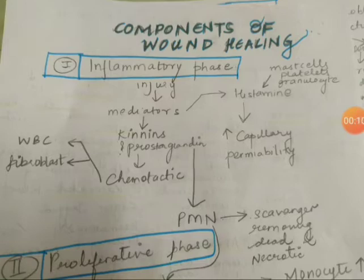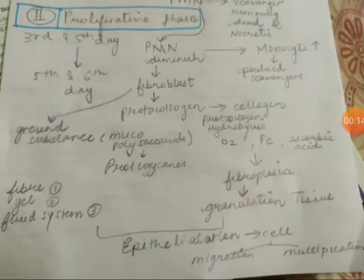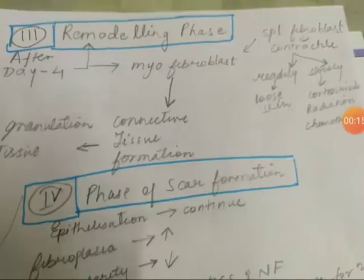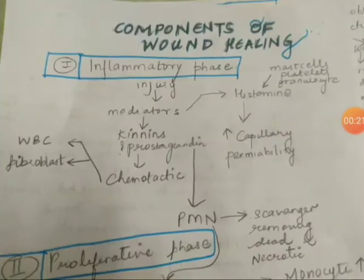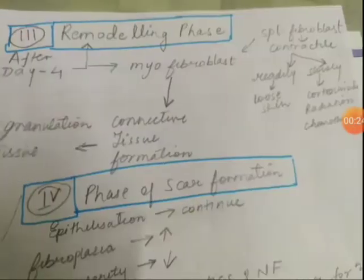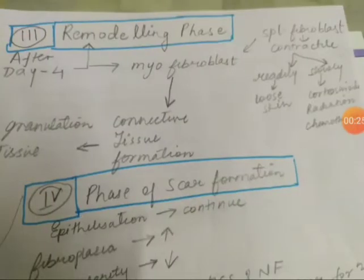There are four phases of wound healing. First, there is the inflammatory phase, then the proliferative phase, then the remodeling phase, and then the fourth and last phase is scar formation. So the four phases are: inflammatory, proliferative, remodeling, and scar formation.